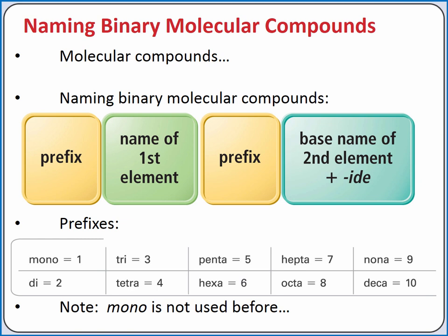Molecular compounds contain covalent bonds and generally form between nonmetals and nonmetals. When we name binary molecular compounds, we use prefixes to indicate the number of atoms of the two elements. Our prefixes go from mono for one atom to deca for ten atoms. We do not use the prefix mono with our first element — if we have one atom of the first element, we just use its name without a prefix.